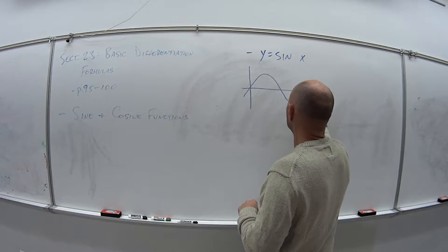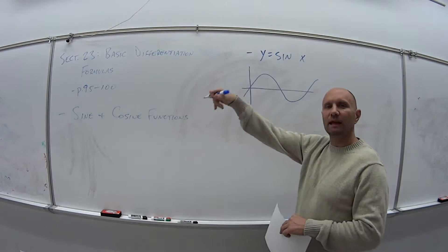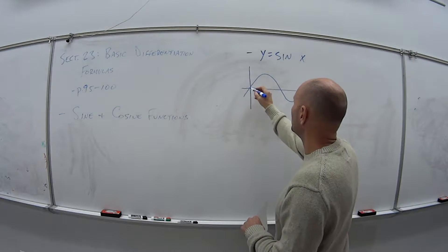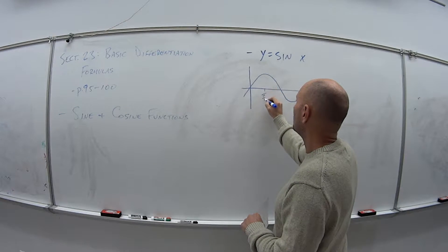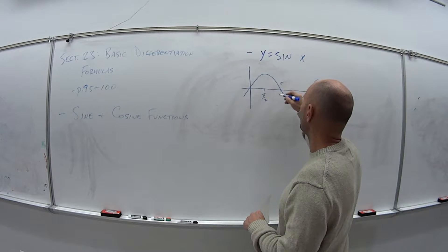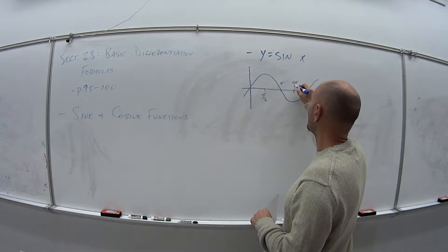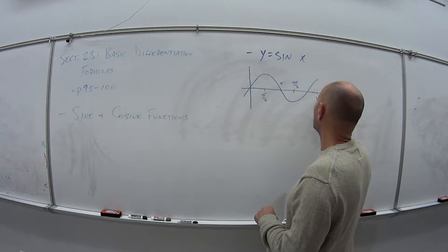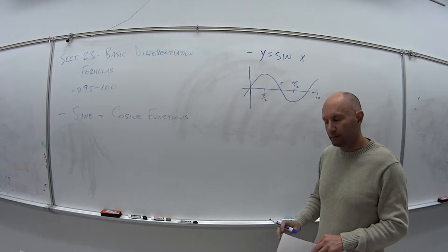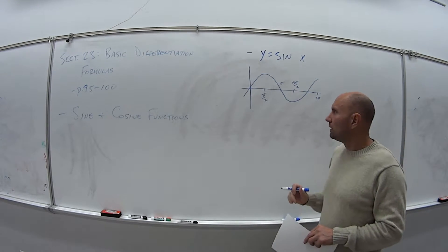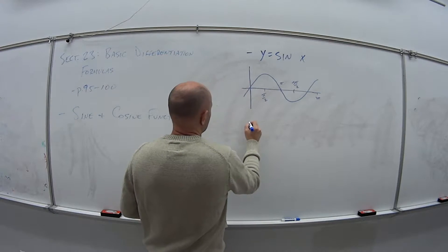It looks something like that goes to negative infinity, goes to positive infinity. We have zero, we have pi over 2, we have pi, 3 pi over 2, 2 pi. Keeps going, right? Now, let's draw another graph underneath of it.